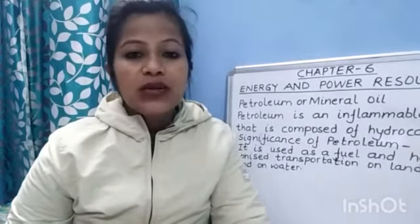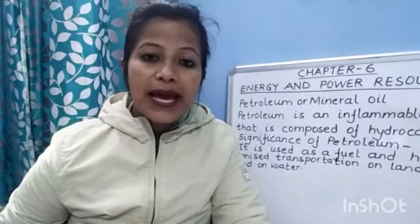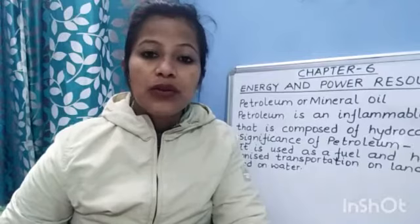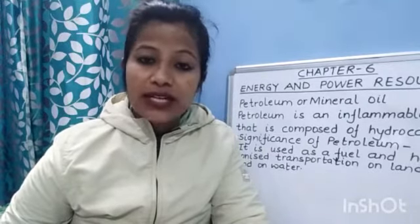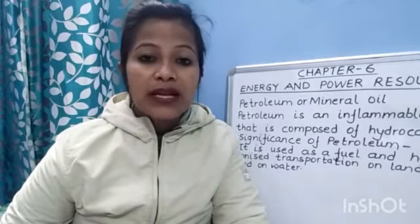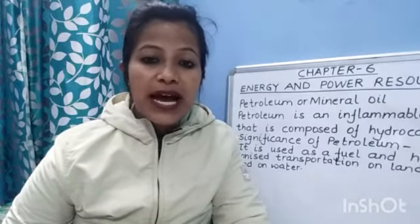Hello class 7. Let's continue chapter 6, energy and power resources. We studied renewable and non-renewable energy resources — renewable resources are also called non-conventional energy resources, and non-renewable energy resources are called conventional energy resources. Conventional energy resources are those that will be finished soon — one day they will be finished, like petroleum and coal. Non-conventional energy resources are those which will never finish; they can be renewed, like solar energy, wind energy, tidal energy, and geothermal energy.